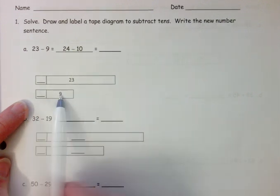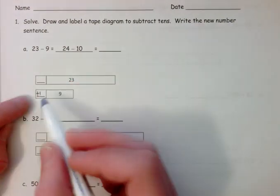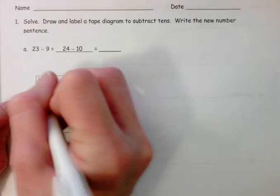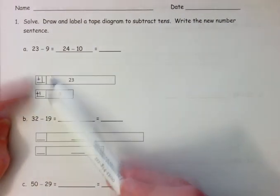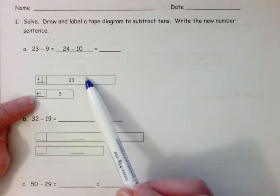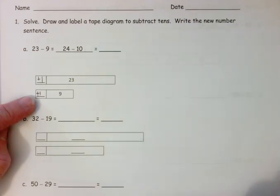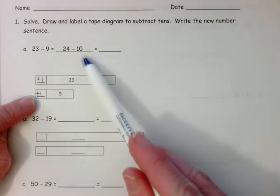Well, 9 is 1 away from 10, so we will add 1. And we always add the same to the top and the bottom. That will make it constant so that our difference is the same difference, 23 minus 9 and 24 minus 10. But now it's easier to mentally subtract 10.